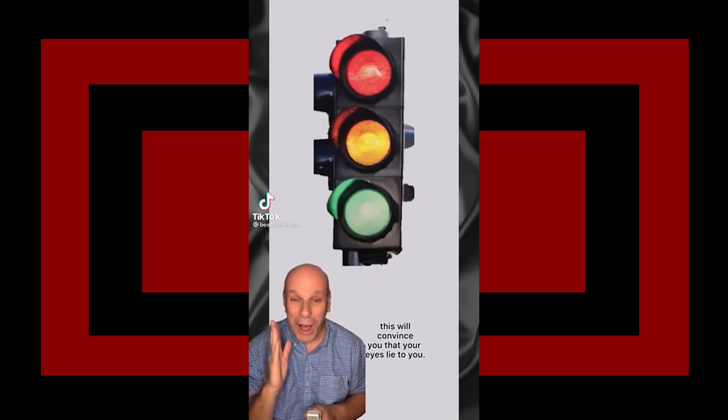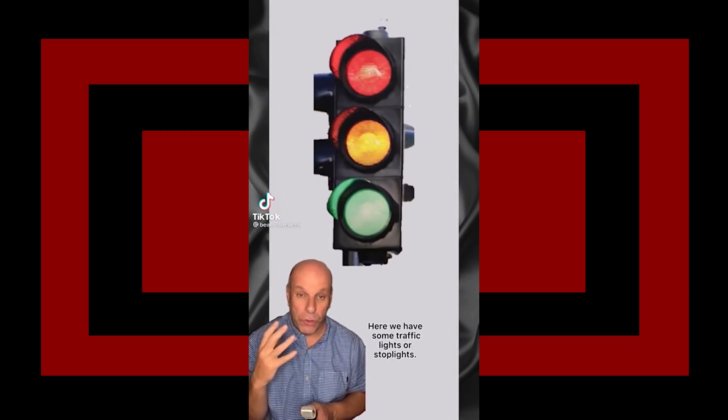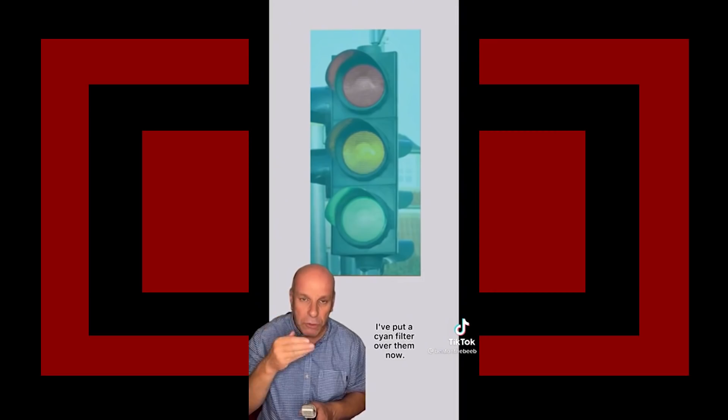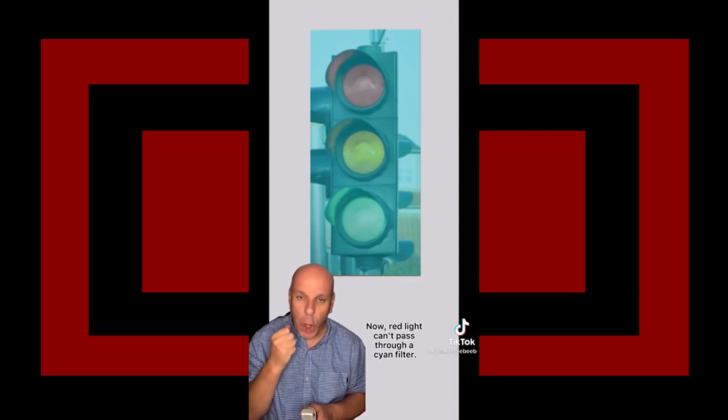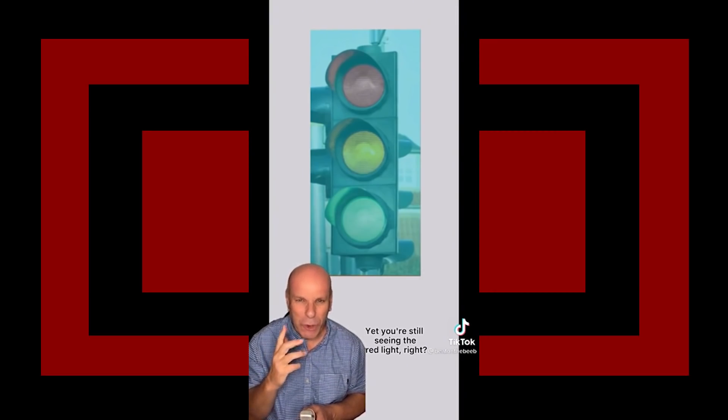Brain needs to start telling the truth. This will convince you that your eyes lie to you. I don't have some traffic lights or stop lights. Put a cyan filter over them. Now, red light can't pass through a cyan filter, yet you're still seeing the red light, right?